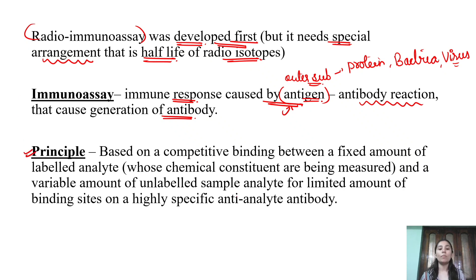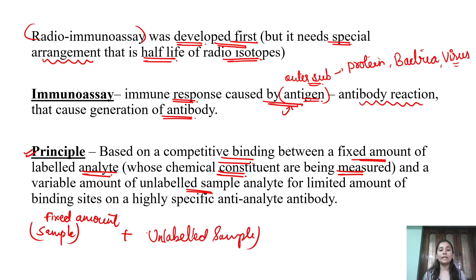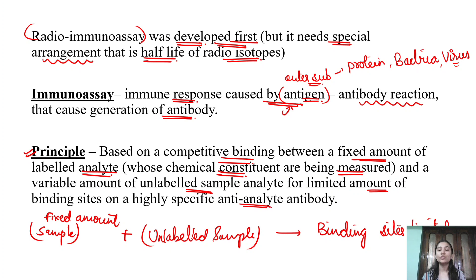What is the basic principle of immunoassay? The basic principle is based on competitive binding — between the fixed amount of labeled analyte (the chemical constituent you want to measure, which is the sample analyte) and the variable amount of unlabeled sample, for a limited amount of binding sites. The antigen, analyte, and antibodies are highly specific towards one another.